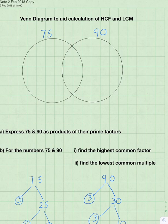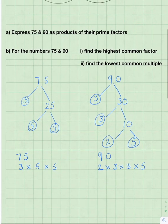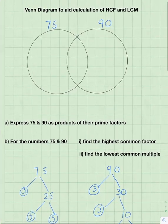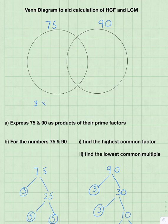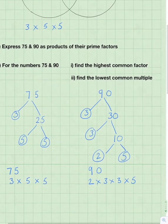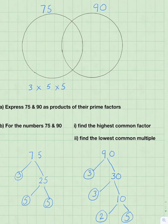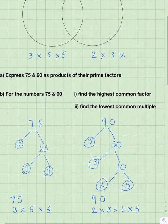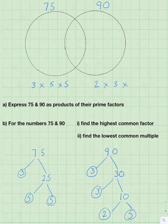And just to remind us, we'll put the prime factors underneath. So the prime factors of 75 are 3 times 5 times 5. And the prime factors of 90 are 2 times 3 times 3 times 5.